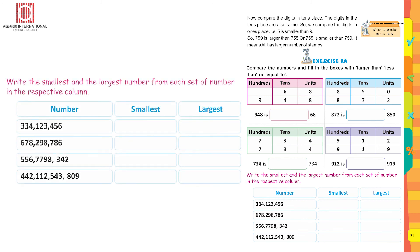Write the smallest and largest number from each set. For the set 334, 123, 456: compare the hundreds place. 456 has four hundreds, 334 has three hundreds, 123 has one hundred. So 456 is the largest number, then 334, and 123 is the smallest number. Do the rest of the questions yourself.